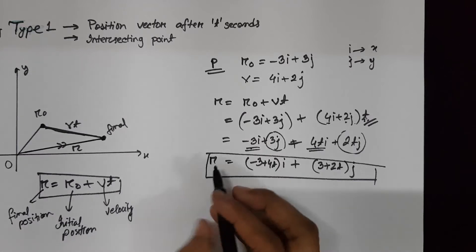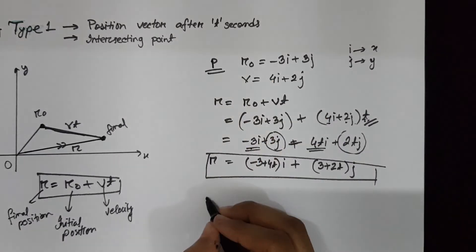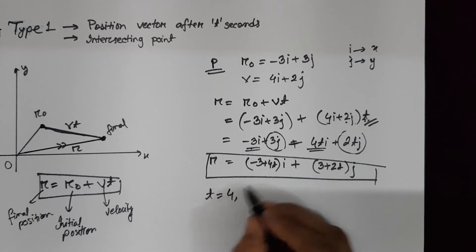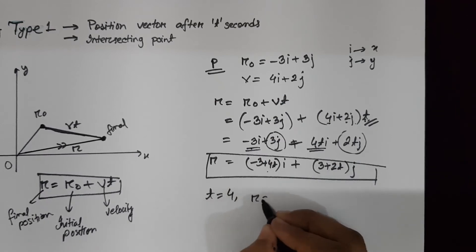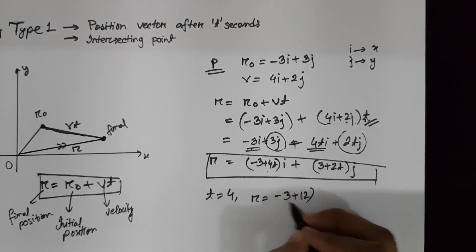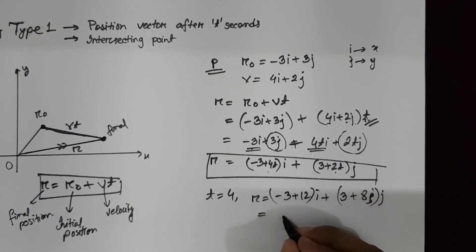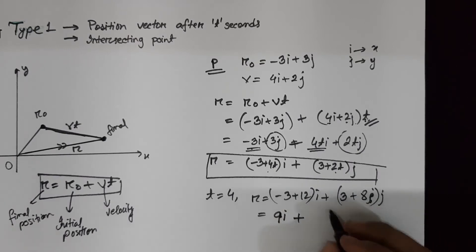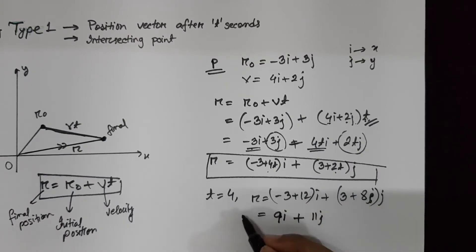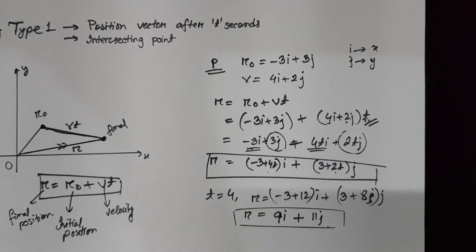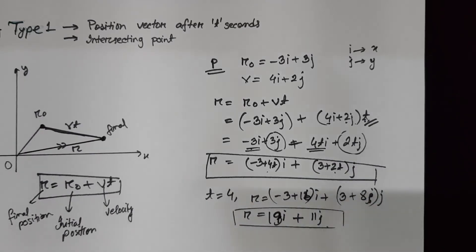If you need to know where particle P is after 4 seconds, just substitute t = 4 into the equation. So 4t gives 16 for the i-component and 8 for the j-component, yielding a final answer of 13i + 11j. The particle P is at position 13i + 11j after 4 seconds.